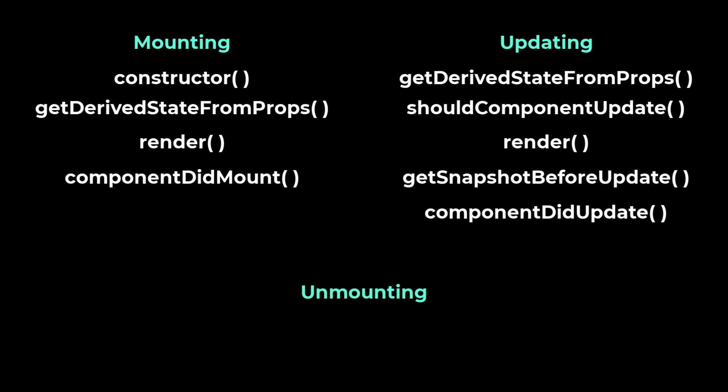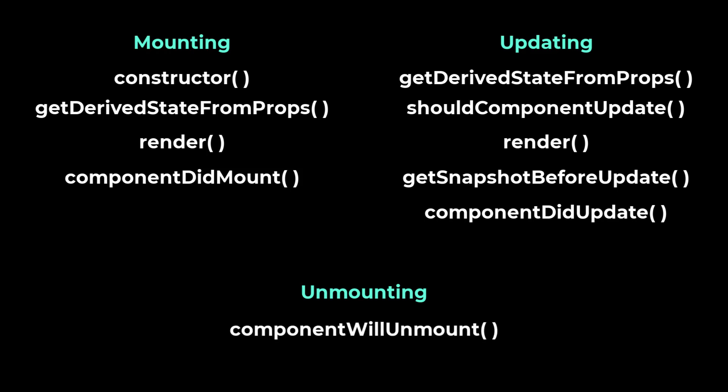A component's unmounting period occurs when the component is removed from the DOM. This method is called when a component is being removed from the DOM: componentWillUnmount. Among these, the highlighted methods are the most commonly used lifecycle methods, so let me explain all of them using an example.